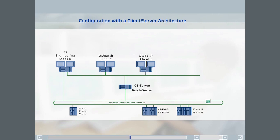Let's now look to see where the Sematic batch software components are installed in this architecture. The batch engineering software is installed on the engineering station. The server PC contains the batch server software for 150 process objects and the hierarchical recipes option. In the architecture, we also want to be able to create recipes on one of the clients.